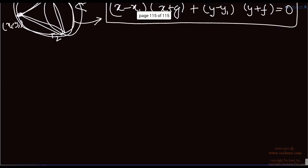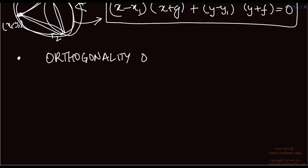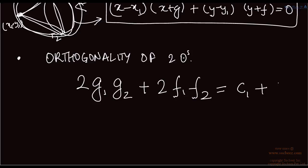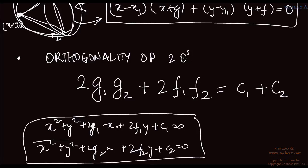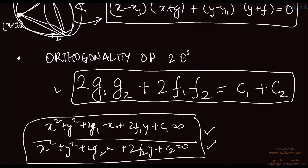The condition of orthogonality of two circles is important and has been asked many times. The condition is 2g1·g2 plus 2f1·f2 equals c1 plus c2, where the two circles are x squared plus y squared plus 2g1·x plus 2f1·y plus c1 equals 0, and x squared plus y squared plus 2g2·x plus 2f2·y plus c2 equals 0. If g1, g2, f1, f2, c1, c2 satisfy this condition, the two circles are said to be orthogonal.